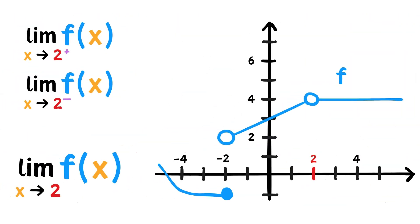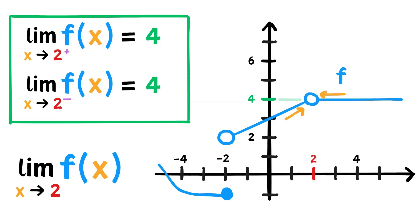Here's another example. Does the limit of f of x as x approaches 2 exist? Well, taking the one-sided limits, as x approaches 2 from the left, f of x approaches 4. From the right, f of x also approaches 4. The one-sided limits are the same. So this means the limit of f of x as x approaches 2 is 4. Notice that although f of 2 is undefined, the limit still exists. As long as the one-sided limits exist, we're fine.